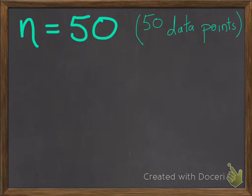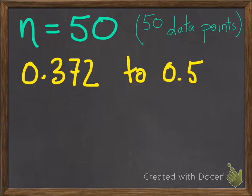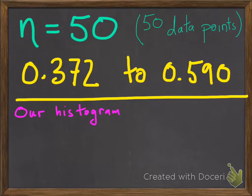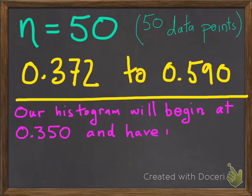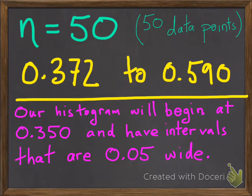Those data points range from a low of 0.372 to a high of 0.590. With that information, we have decided that we are going to let our histogram start at a number below our lowest point, which will be 0.35, and each bar of the histogram will go up by 0.05. So that's the width, 0.05, of our data classes or the intervals of the histogram.